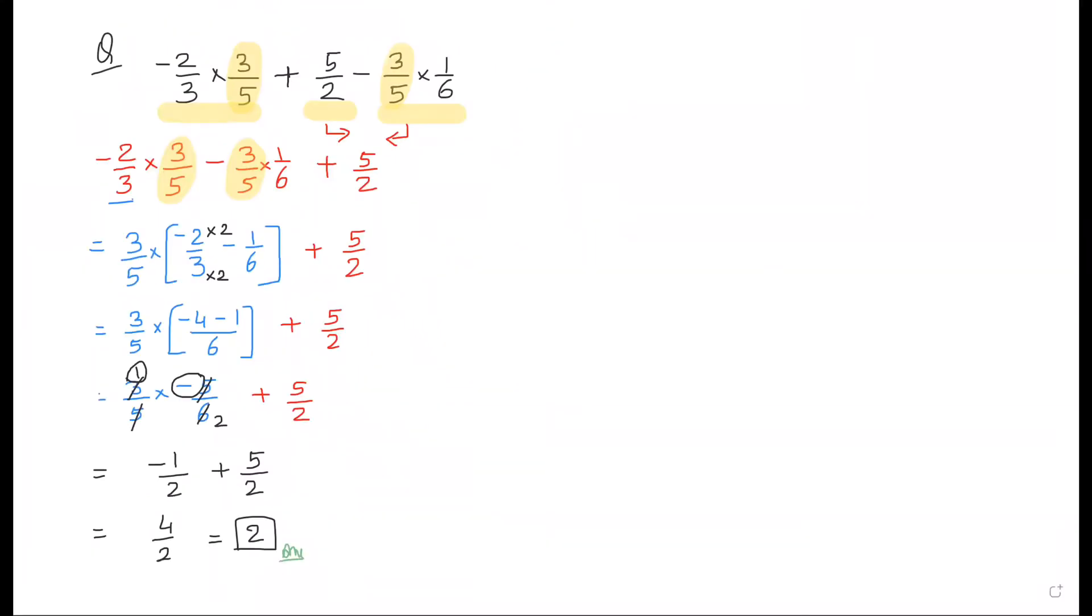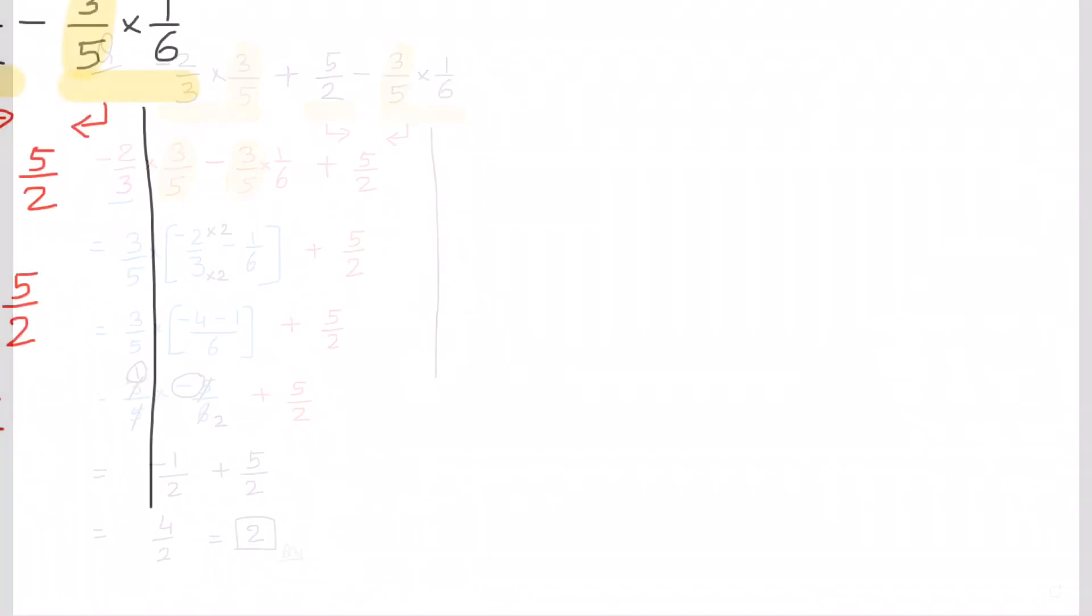Now if you have to solve directly without using property, you can do this same question without property also. Like first term, you apply BODMAS rule, so you multiply negative two into three upon three into five.